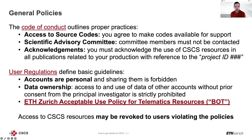The general policies are outlined in two main pages on the CSCS main web page. The first is the code of conduct, which outlines proper practices: access to source code, codes you need to agree to make available for support — this is automatically assumed when you accept your account at CSCS. The scientific advisory committee members must not be contacted. You must also acknowledge the use of CSCS resources in all publications by referencing your project ID in the acknowledgements.